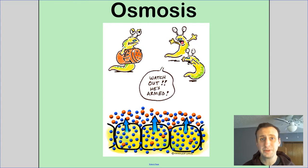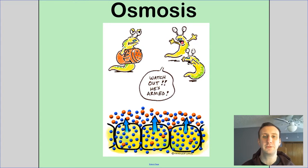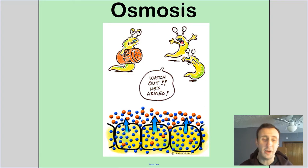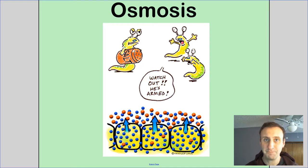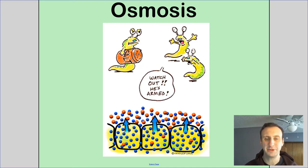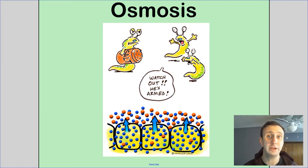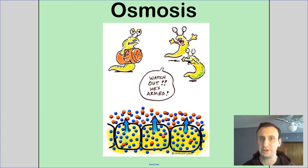You learned last day that diffusion is movement from high concentration to low concentration. For example, you make some microwave popcorn, and you have all that wonderful buttery scent from the popcorn, and it ends up traveling throughout the house. That's happening because the popcorn particles are moving from high concentration to low concentration. That's diffusion.